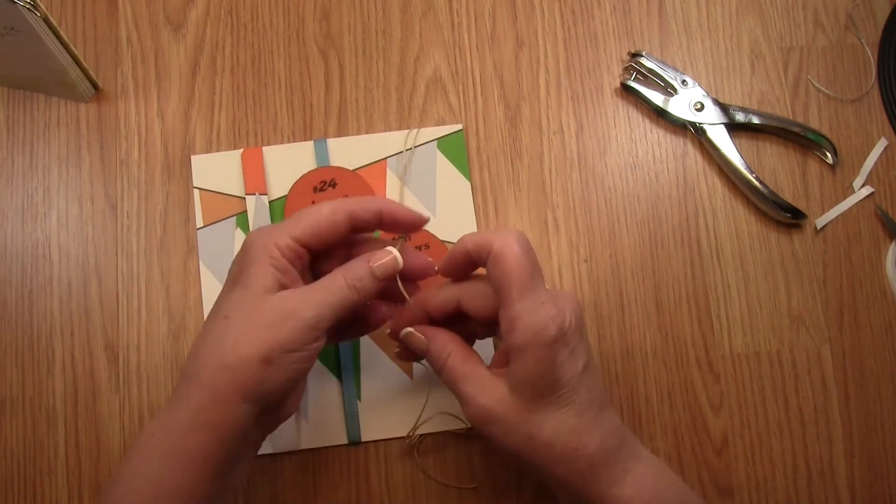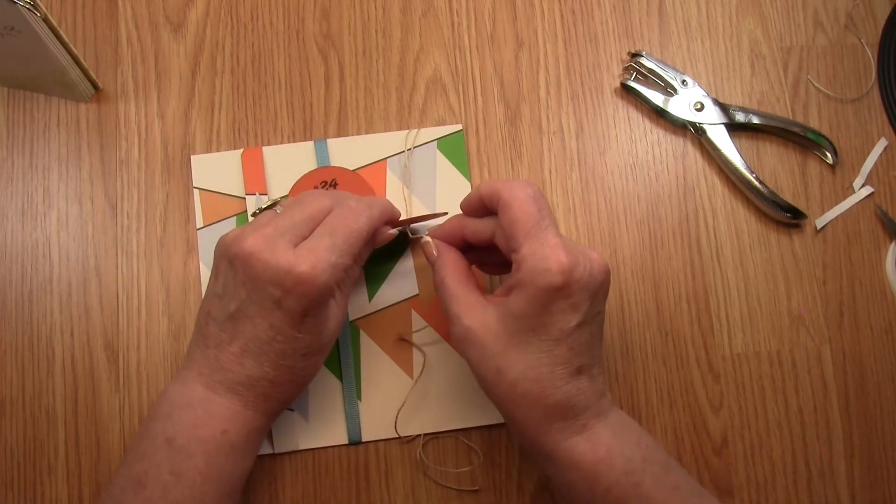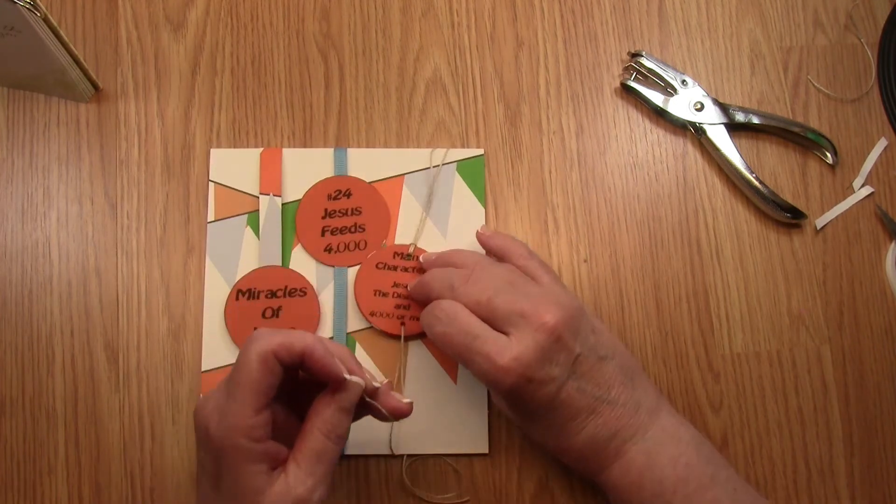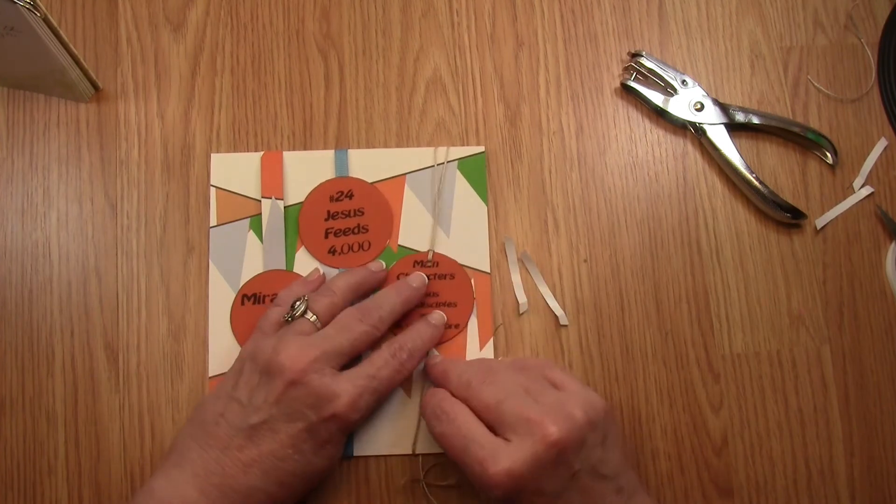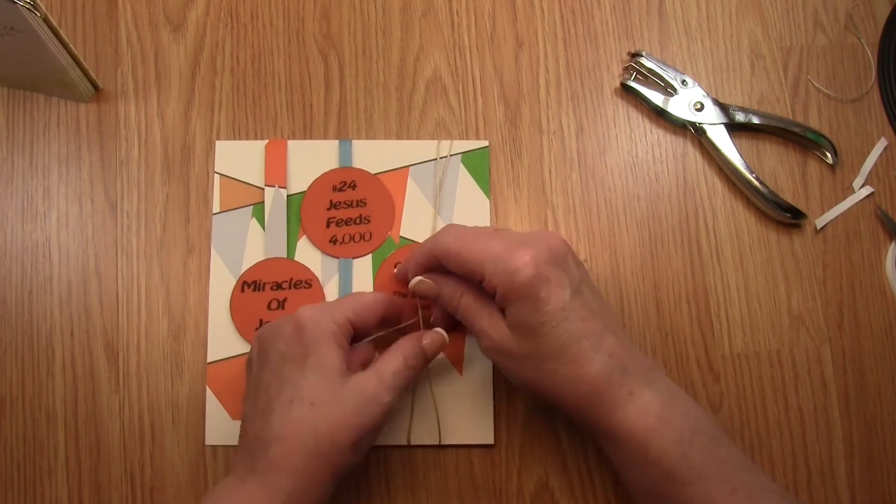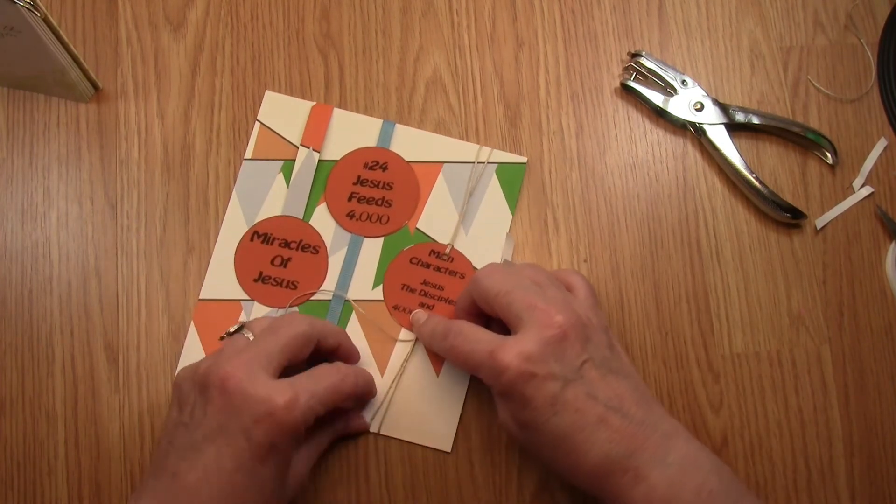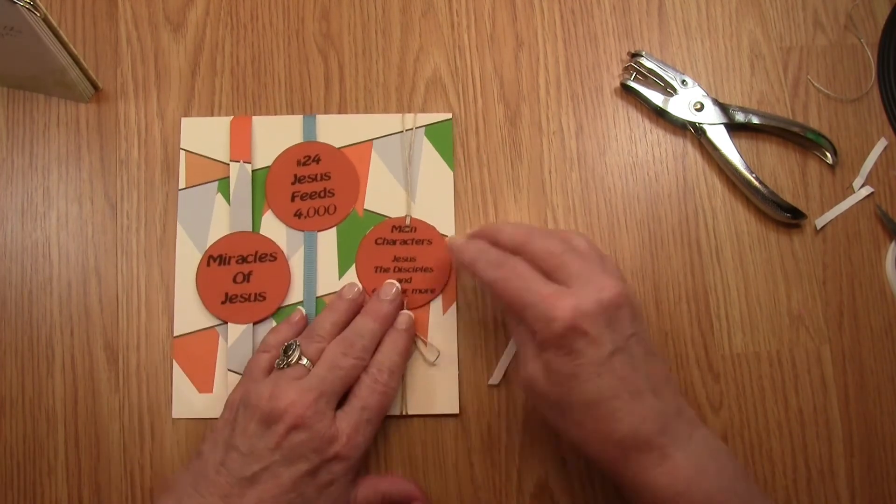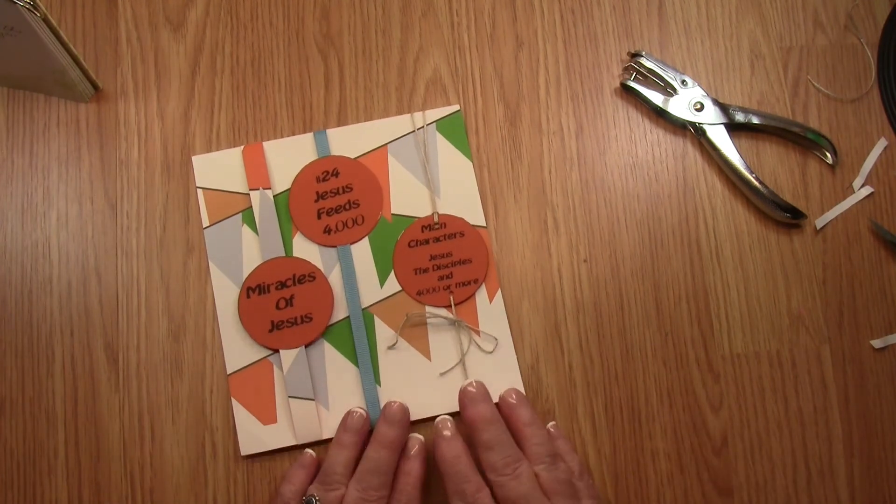We're then going to lay it wherever we'd like on the page. We're going to take our string around the page, we're going to take one of the strings and we're going to put it through both of the circles through that bottom hole, and we're going to draw it tight. And we're going to take the other string and we're going to tie it in a knot or a bow however you would choose, and that completes our page.